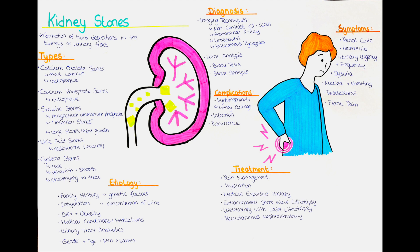Kidney stones can cause changes in urination including increased frequency of urination, urgency to urinate, painful or burning sensation during urination or incomplete emptying of the bladder. Some patients with kidney stones may experience nausea and vomiting, which can occur due to the severe pain or as a reflex response to the pain. The intense pain caused by kidney stones can lead to restlessness and discomfort, and affected individuals may have difficulty finding a comfortable position. Gentle pressure or palpation over the affected kidney area, the flank region, may elicit tenderness or pain.